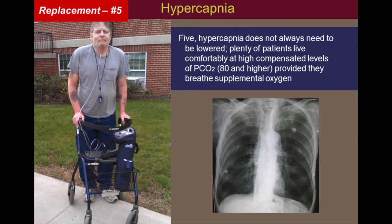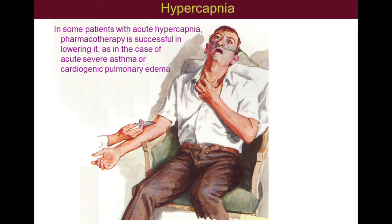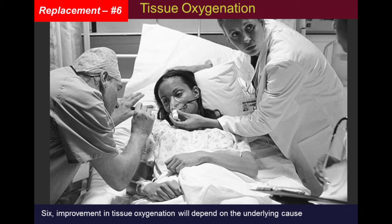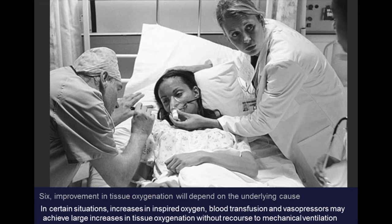Five: hypercapnia does not always need to be lowered. Plenty of patients live comfortably at high compensated levels of PCO2 — 80 and higher — provided they breathe supplemental oxygen. In some patients with acute hypercapnia, pharmacotherapy is successful in lowering it, as in the case of acute severe asthma or cardiogenic pulmonary edema. Six: improvement in tissue oxygenation depends on the underlying cause. In certain situations, increases in inspired oxygen, blood transfusion, and vasopressors can achieve large increases in tissue oxygenation without recourse to mechanical ventilation.